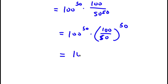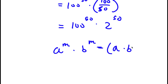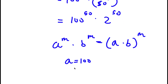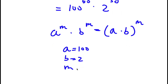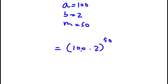Now, 100 divided by 50 is simply 2, so I have 100 to the power of 50 times 2 to the power of 50. Using the property that a to the power of m times b to the power of m equals a times b to the power of m, with a as 100, b as 2, and m as 50, this equals 100 times 2 to the power of 50. Well, 100 times 2 is 200, so I'm left with 200 to the power of 50.